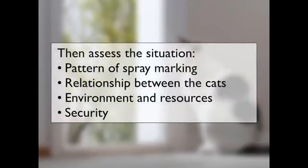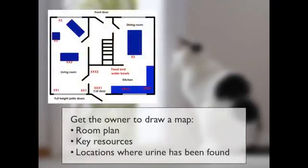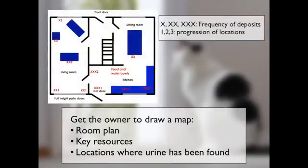Once we've ruled out those problems we need to think about the specific situation. We need to look at the pattern of spray marking, the relationship between the cats, the kind of environment the cats are living in, the resources available to them, and the security of the home environment. We usually get the owner to start by drawing a map of the environment — a room plan with all the main rooms, furniture, and key resources like food, water, and latrine sites — and then record on that diagram all the locations where they've found urine.